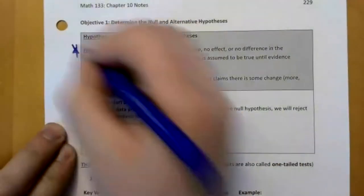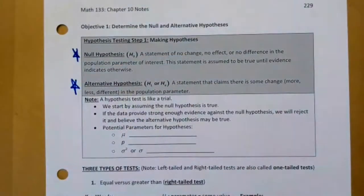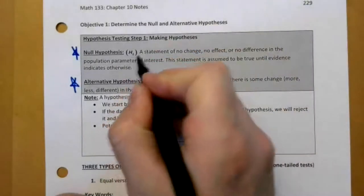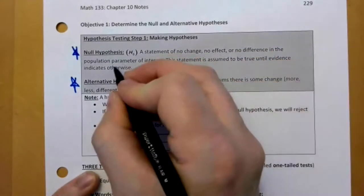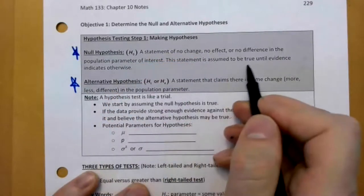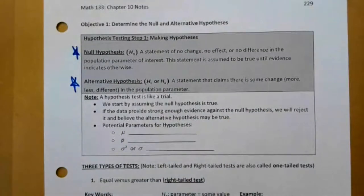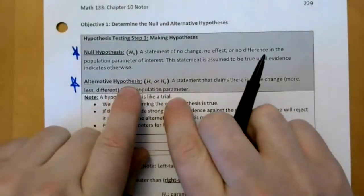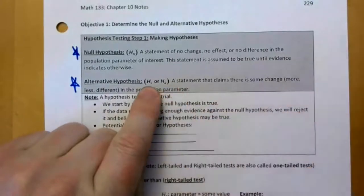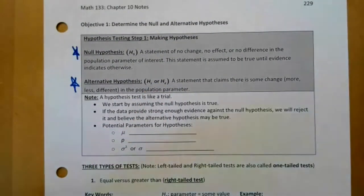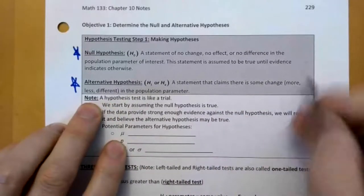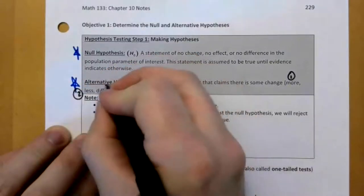There's a thing called the null hypothesis and a thing called the alternative hypothesis. These are always the two hypotheses that you make. This is always listed as H0 for meaning zero change. So, it's a statement of no change, no effect, or no difference in the population parameter of interest. And this statement is assumed to be true until we prove otherwise. Well, I shouldn't say prove, until we have evidence otherwise. And then the alternative hypothesis, we can write it in two different ways, H1 or HA.